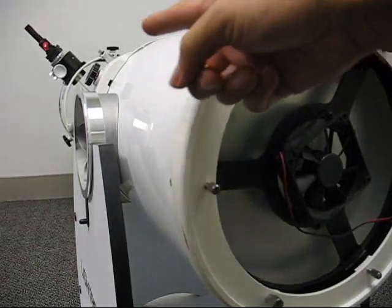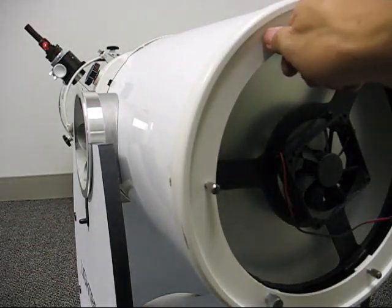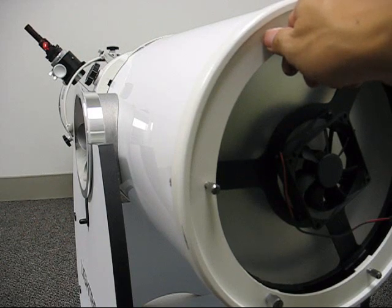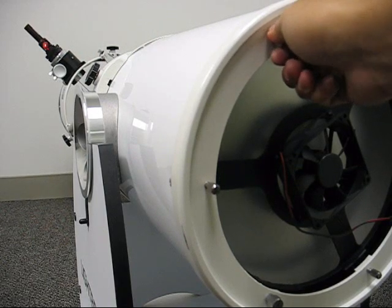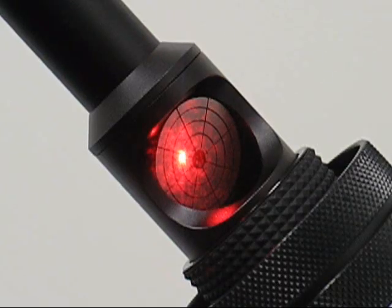Look at the laser collimator faceplate and start to adjust the collimation screws on the primary until the laser dot is in the center of the laser hole.